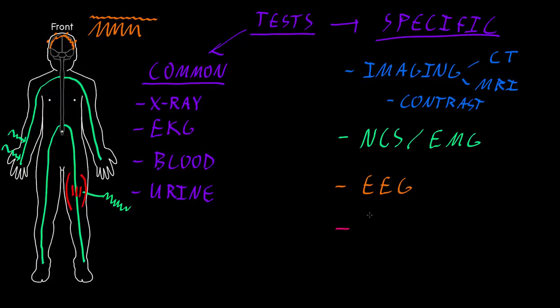The next specialized test that can be helpful is called the LP for lumbar puncture, and this also has a nickname of spinal tap. What the lumbar puncture does is it obtains a sample of a fluid called cerebrospinal fluid, CSF. The cerebrospinal fluid is contained in certain cavities inside the brain, and these cavities are connected to an area outside the brain that also has this fluid, which is also connected to an area outside the spinal cord that also has this fluid.